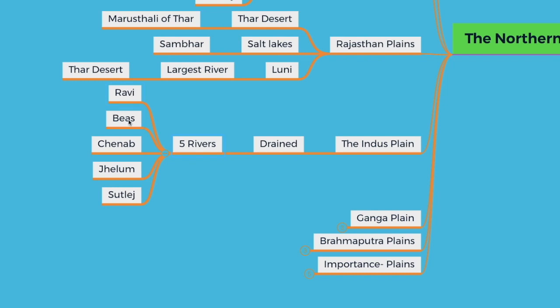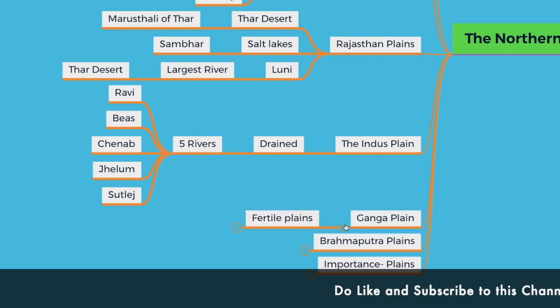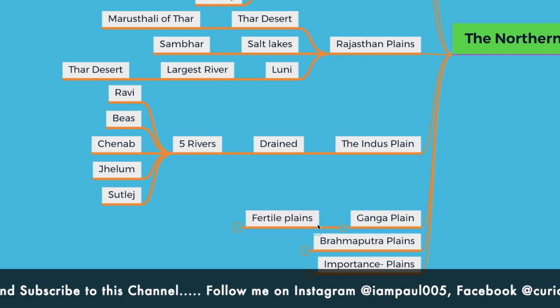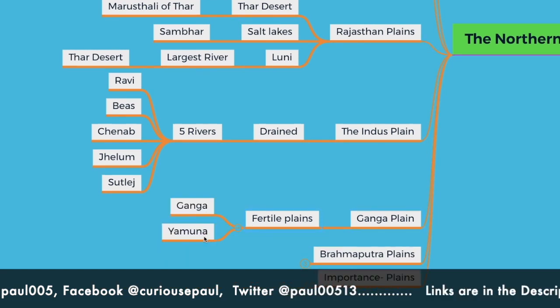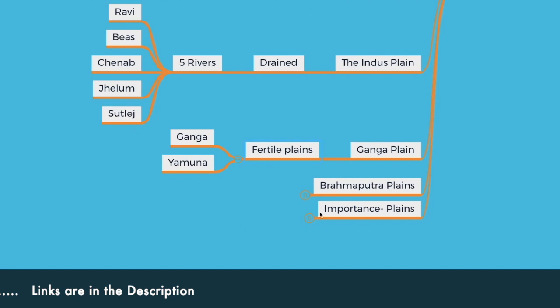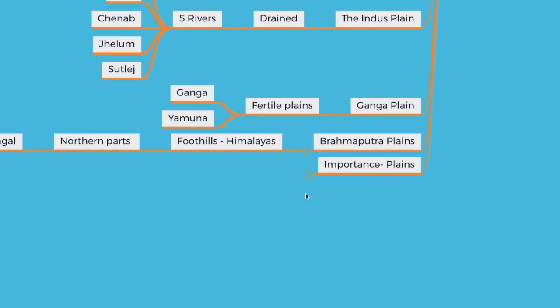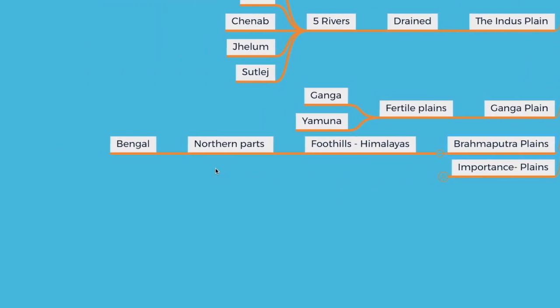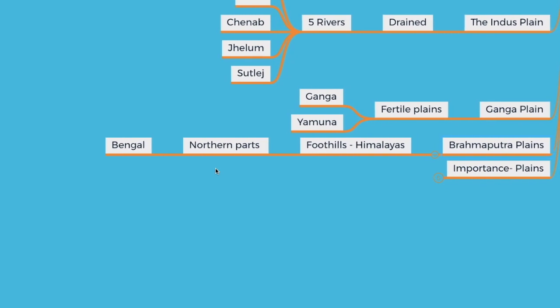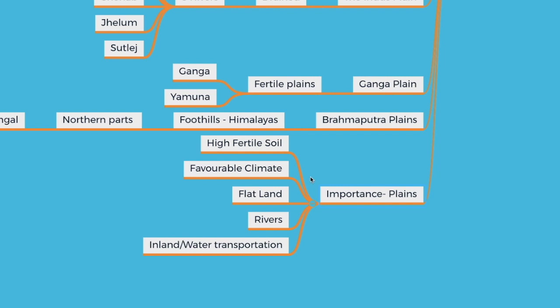The five rivers of the Indus Plain are Ravi, Beas, Chenab, Jhelum, and Sutlej. Moving on to the Ganga Plain, it is formed by fertile plains between the Ganga and Yamuna rivers. Next we have the Brahmaputra Plains, which comprise areas extending from the foothills of the Himalayas to the north-western parts of Bengal. The importance of the plains: they are highly fertile, have a favorable climate, are flat and helpful for construction of roads and railways, have many rivers good for irrigation, and make inland water transportation very easy.